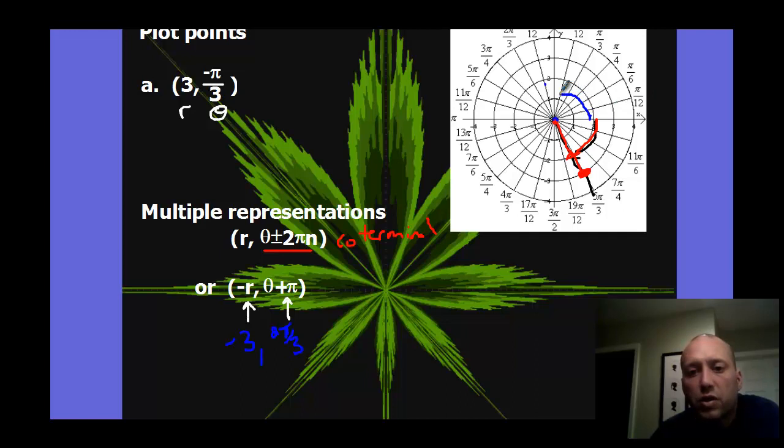If I had to plot that, I'd go 2 pi thirds first, so there's 2 pi thirds, and instead of going 3 up, we want to go in the opposite direction and get the same point. So that's another coterminal point. The negative r value just means the opposite direction, and then you have your coterminal angles like you did in our trig functions.